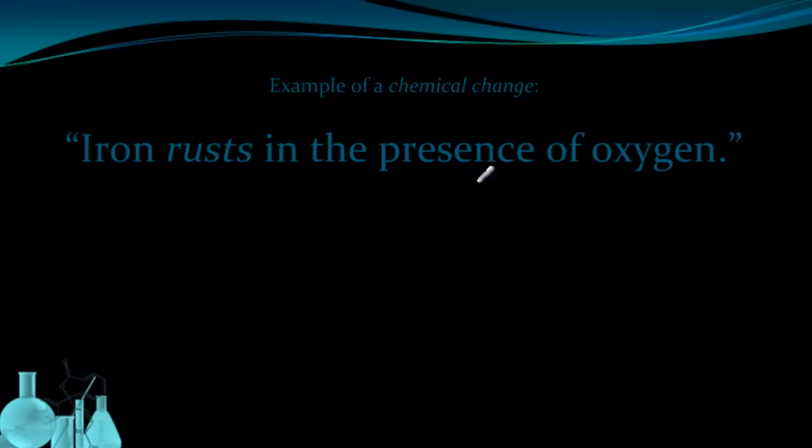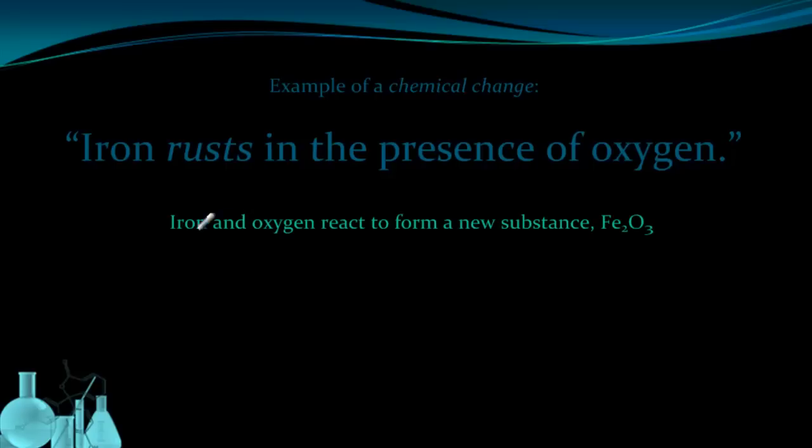Another way of talking about this chemical change is to say that iron and oxygen react to form a new substance, Fe2O3. This is the formula for rust. This tells us that rust is made up of two iron atoms and three oxygen atoms.